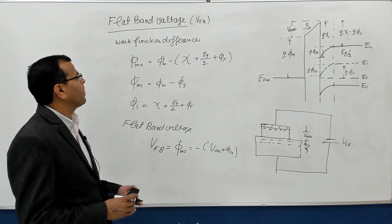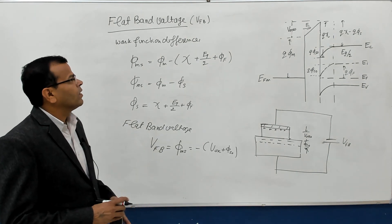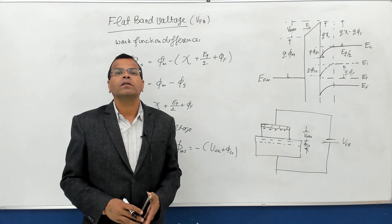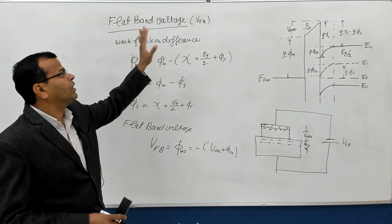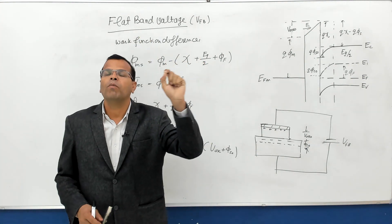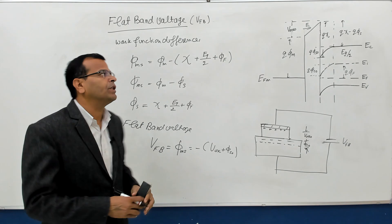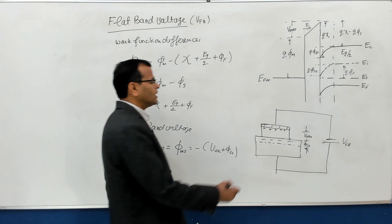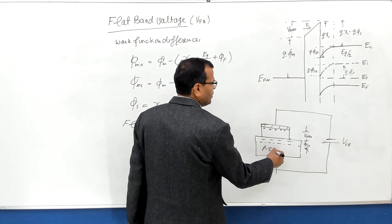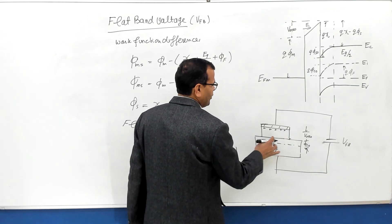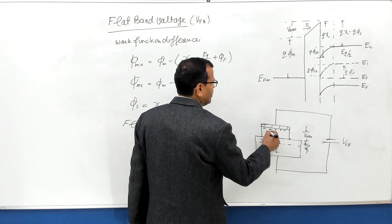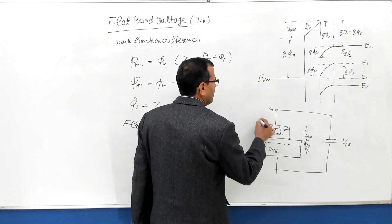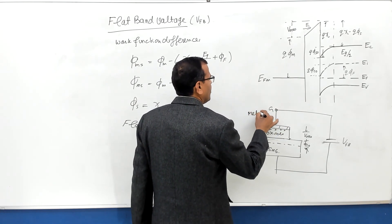Hello friends. The next important topic of MOS capacitor is the flat band voltage. I will be taking again a MOS capacitor with P substrate. This is the MOS capacitor I will be talking about — with P substrate. This is oxide, this is the gate terminal, and this is metal.